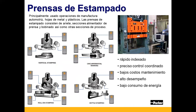Otra aplicación muy común es la prensa de estampado, principalmente usada para operaciones de manufactura automotriz en hojas de metal y plástico. Las prensas de estampado consisten de ariete, sección alimentadora de la prensa y bobina. El variador permite bajar y mover los motores que mueven los rodillos de las hojas, lo que permite un rápido indexado, un preciso control coordinado, bajos costos de mantenimiento, alto desempeño y bajo consumo de energía.